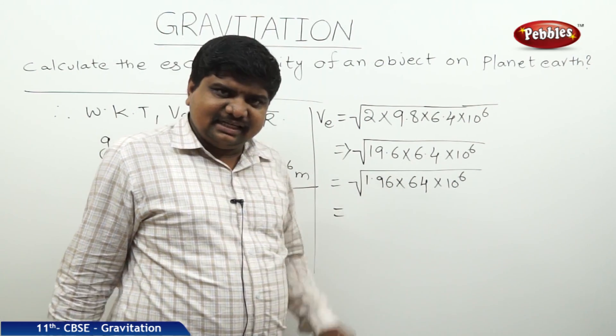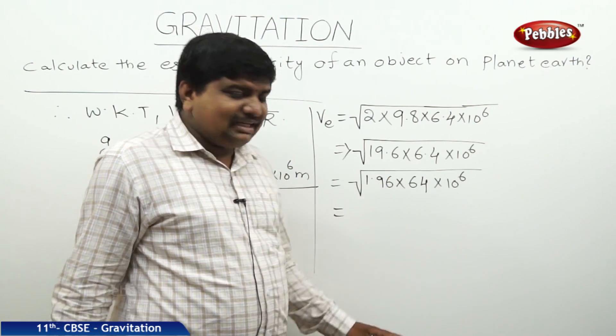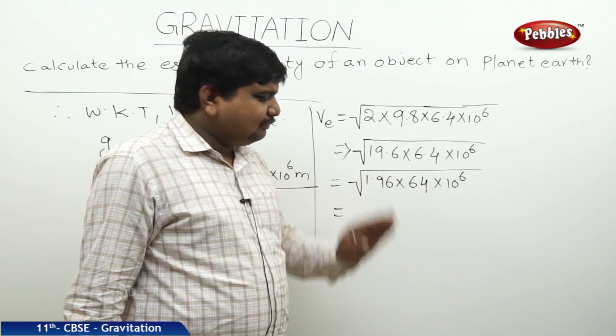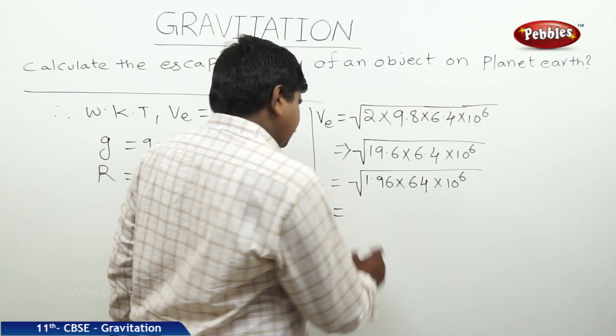Root of 1.96 is 1.4, root of 64 is 8, root of 10 power 6 is 10 cube.